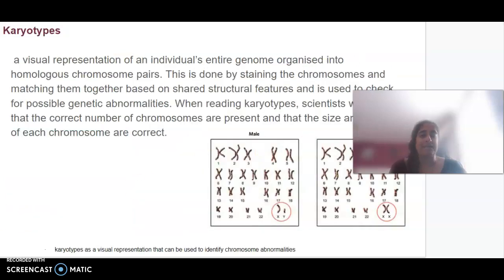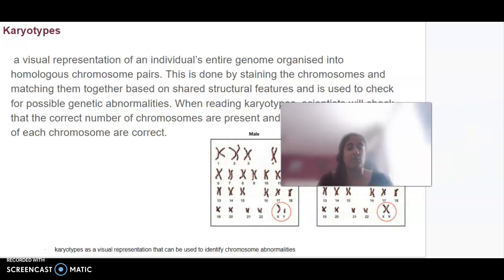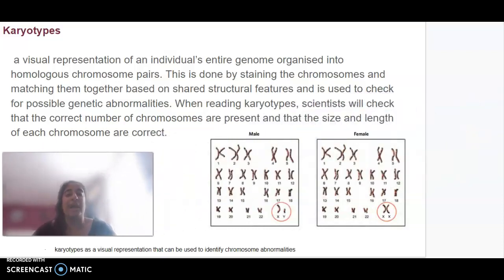We can identify some of this using a karyotype. A karyotype is a visual representation of all the chromosomes or the entire genome of somebody. We can pair up each of their chromosomes, their homologous chromosomes. This is done by staining the chromosomes and matching them based on those key features: the size, centromere location, and the banding pattern.